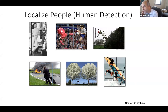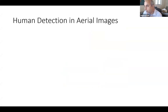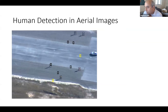The next problem is not only answering yes or no, but also localizing the object — putting a bounding box around it to say there's a person and here is where it is. We did work to detect humans in aerial images — very challenging because from the air people appear very small, and due to the sun there are shadows to avoid. The PhD student did pretty good work there.